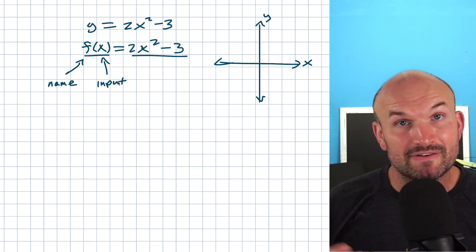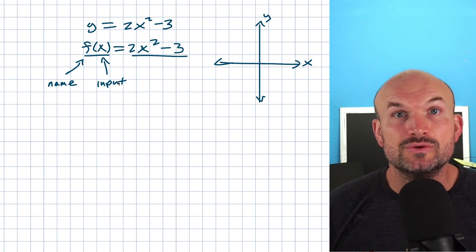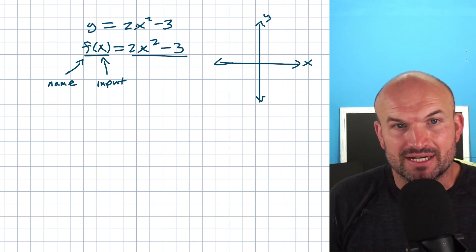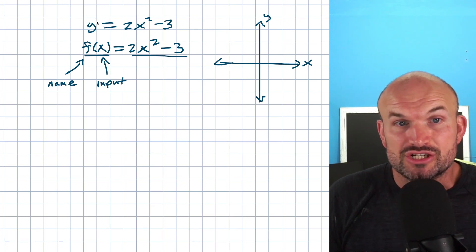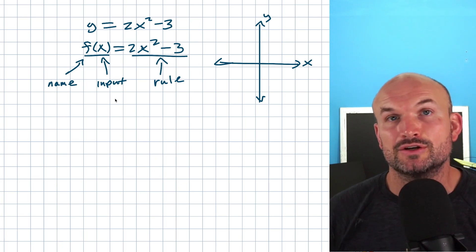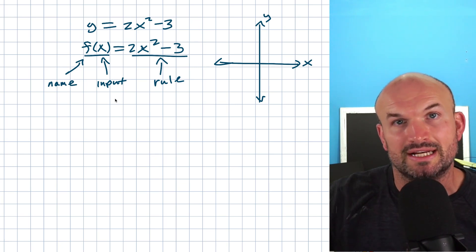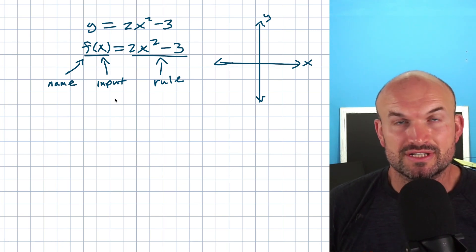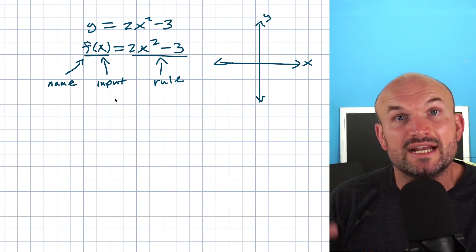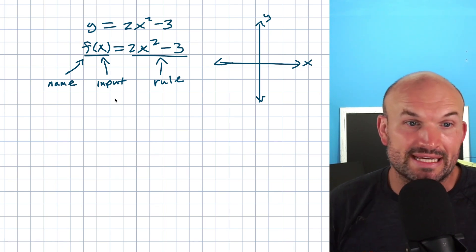That's the most important thing to differentiate when thinking about functions compared to an equation. For something to be a function, for every input, you can only have one unique output. That's not the case for an equation, because an equation is just dealing with a relationship between two variables. This rule is what you're going to follow. We can look at the graphical approach using the vertical line test, or we can just test the values — whenever we plug something into the function, we should only get one unique output.